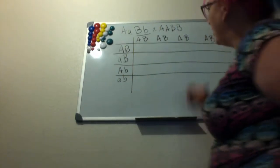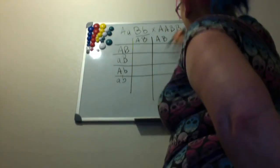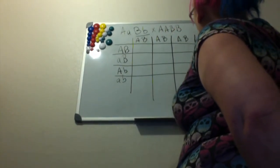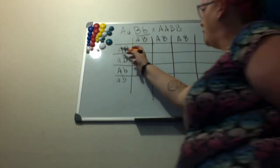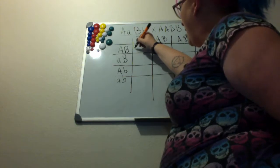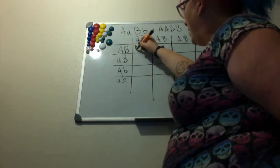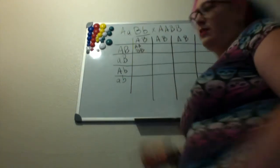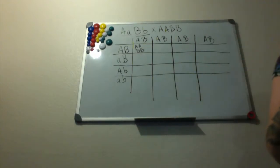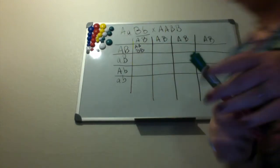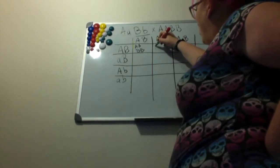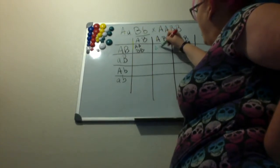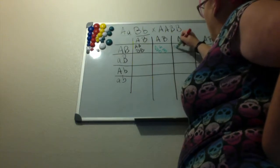I really hope you guys can see this. So now we're going to do our crosses. We've got two dominant A's and two dominant B's in this first one. Let me get a different color, I'm going to go with this pretty green.